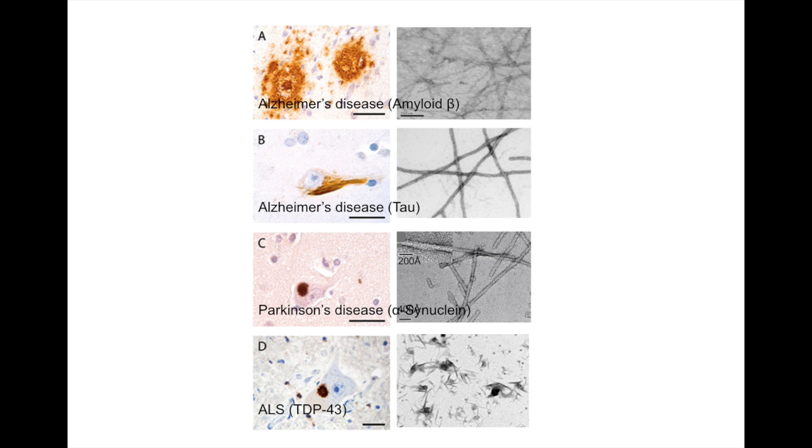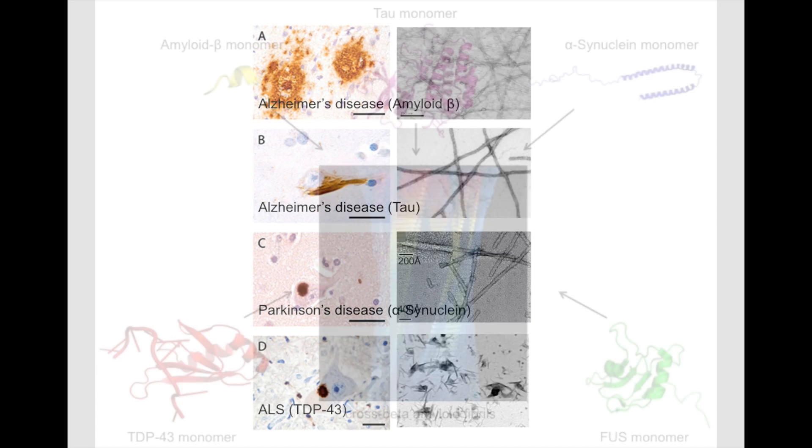More than 5 million Americans live with Alzheimer's disease. Parkinson's disease affects approximately 1 million Americans, and ALS currently affects 30,000 Americans.